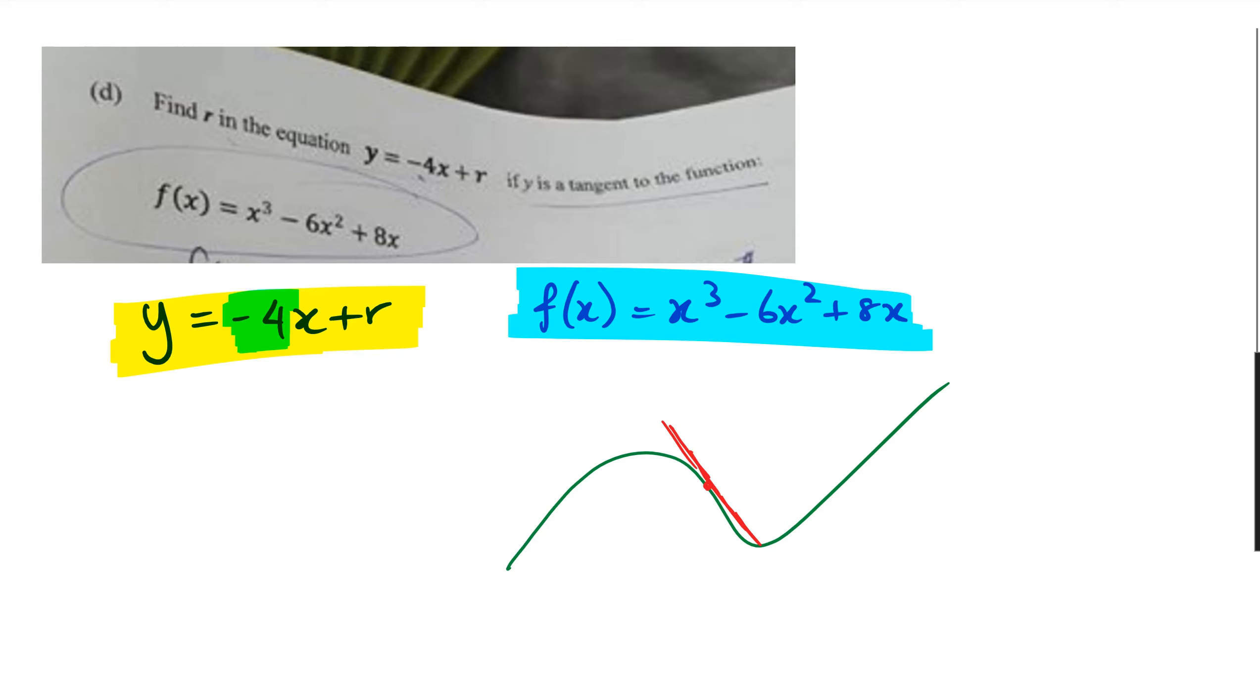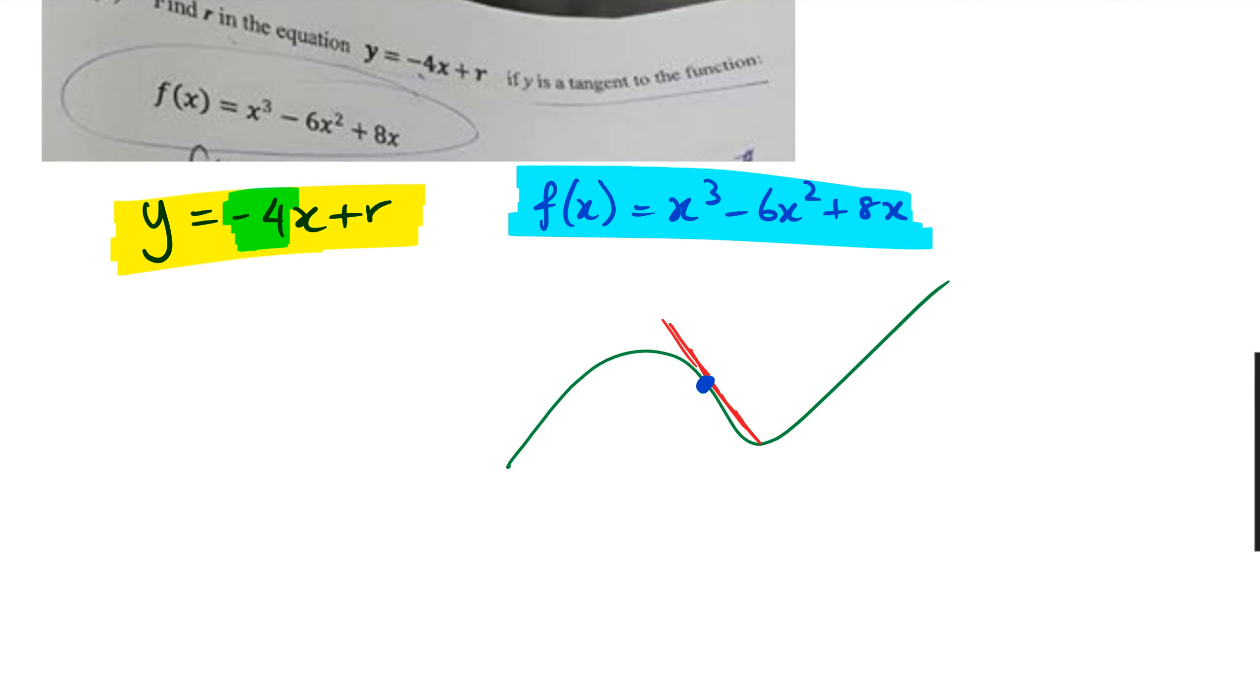So what we need to work out first is we need to figure out where the red line, which is the tangent touching the cubic, is going to be. The way we're going to do that is we're actually going to work out what f'(x) is first. So we got x³ - 6x² + 8x, and when I differentiate it, I'm going to get 3x² - 12x + 8.